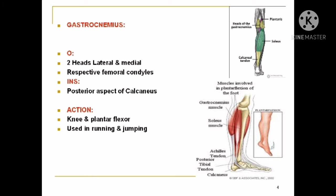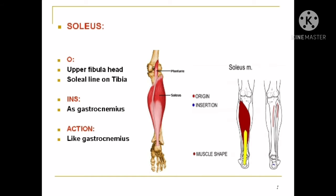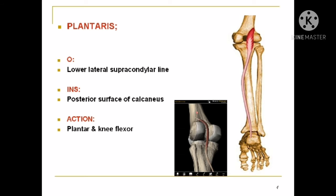The soleus muscle arises from the upper fibula, the head of the fibula, and the soleal line on the tibia. It inserts into the gastrocnemius tendon, and its action is like that of the gastrocnemius muscle. The plantaris muscle arises from the lower lateral supracondylar line of the femur, inserts upon the posterior surface of the calcaneus, and its action is plantar flexion and knee flexion.